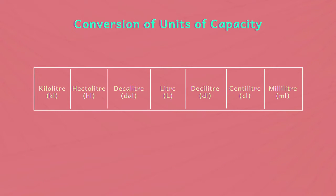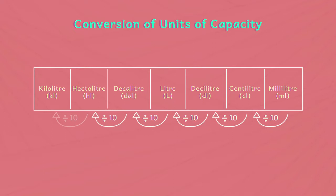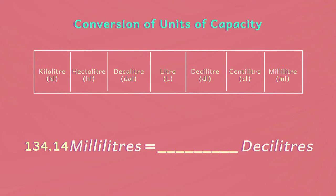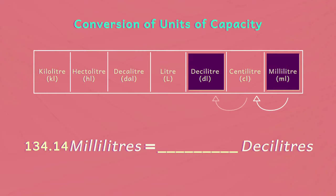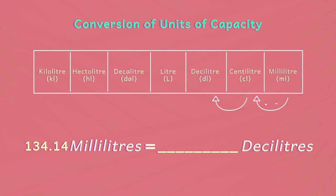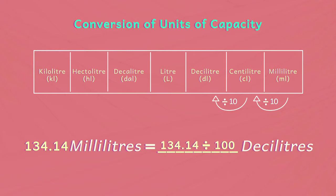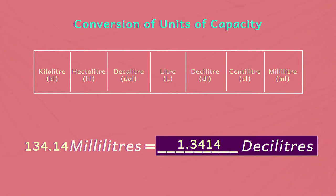We can also convert smaller capacity units to larger capacity units by dividing by ten at each step. Convert 134.14 millilitres to decilitres. Decilitre is two steps to the left of millilitre, so we divide by 100. Therefore, 134.14 millilitres equals 134.14 ÷ 100 = 1.3414 decilitres.